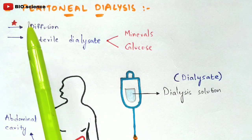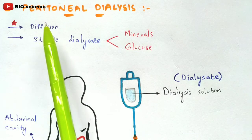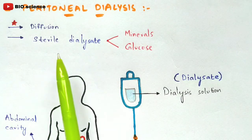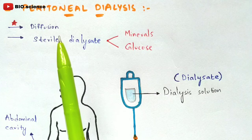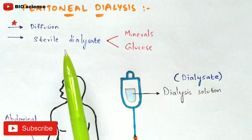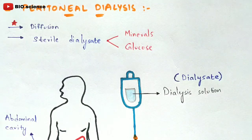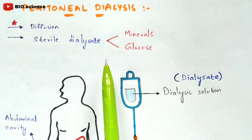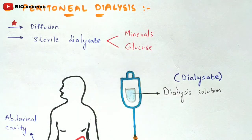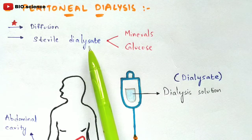The solution used in peritoneal dialysis is sterile dialysate. As explained in the previous video, sterile dialysate contains electrolytes, salts, pure water, minerals, and glucose. The minerals and glucose are present in high concentration in this sterile dialysate solution.